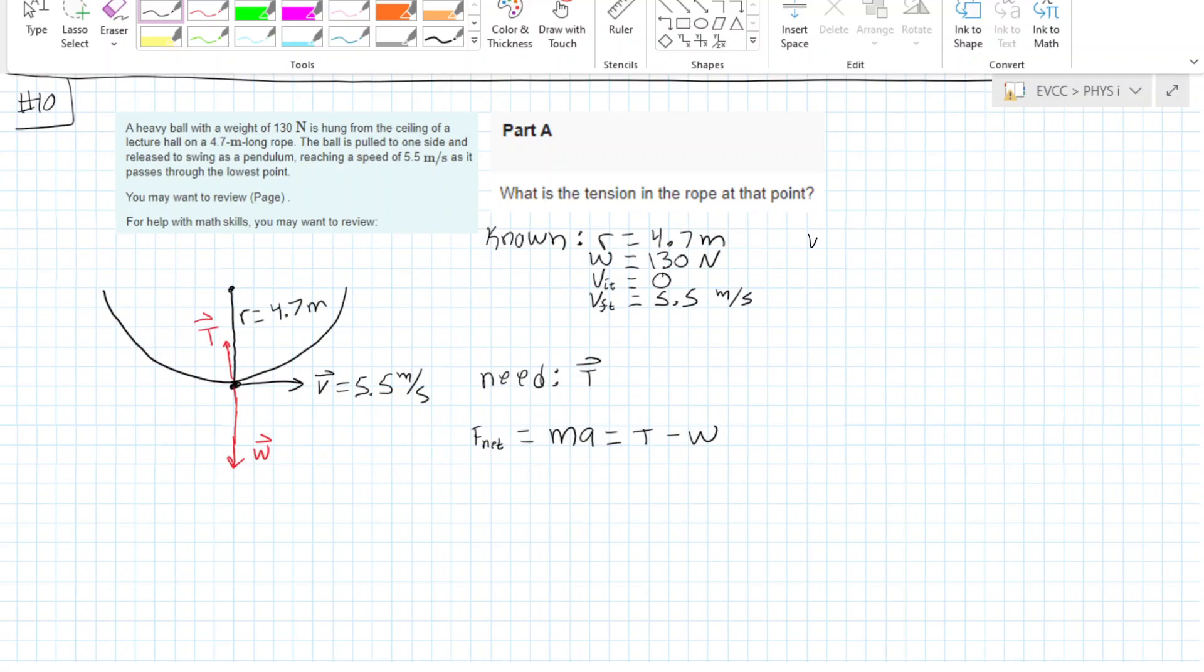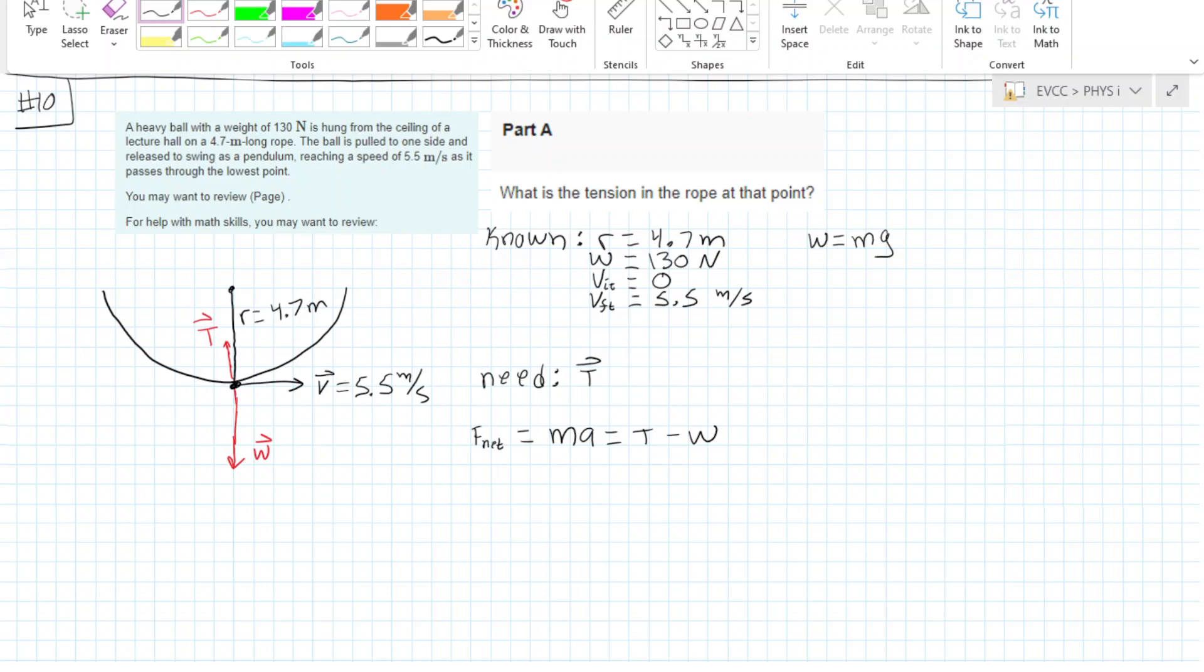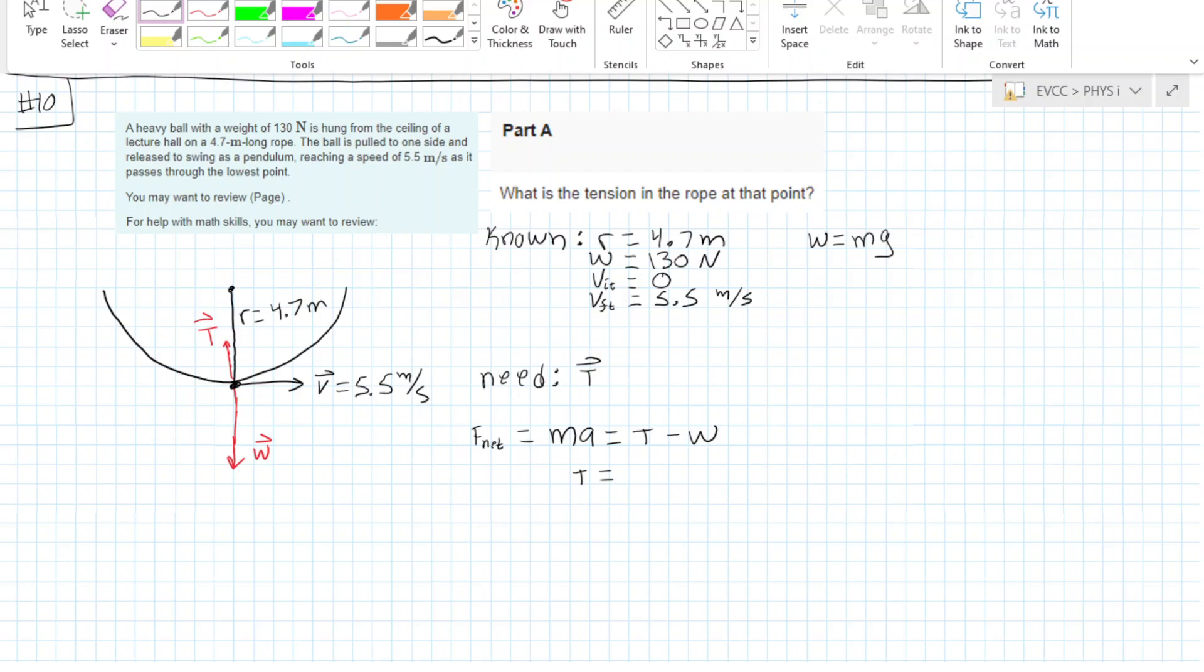We know that weight equals mass times gravity. We already have a force of weight, 130 newtons, but we need T. So tension equals mass times acceleration plus weight. We already have the weight, but we don't have the mass. We can find it from the weight since weight equals mass times gravity.